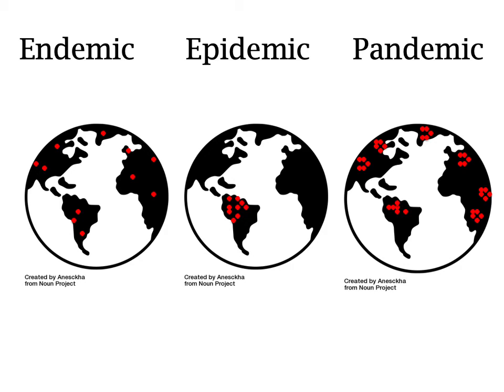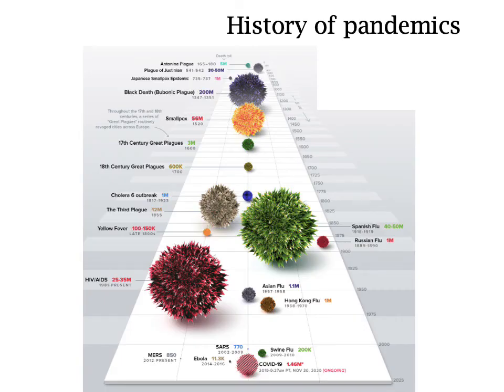A pandemic, then, is a worldwide spread of a new disease or a strain of an existing disease to which the majority of the population doesn't have any immunity. The 1918 Spanish flu epidemic that ripped across the globe after World War I is a typical example of a pandemic. However, there are countless examples of pandemics throughout history.